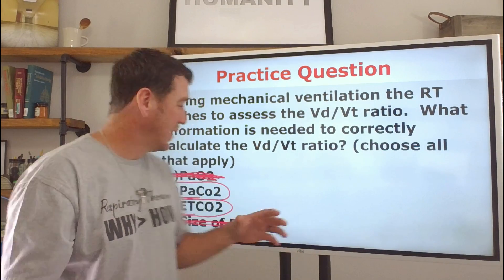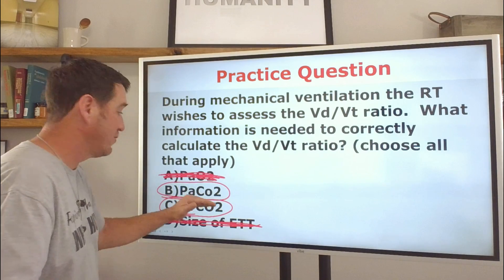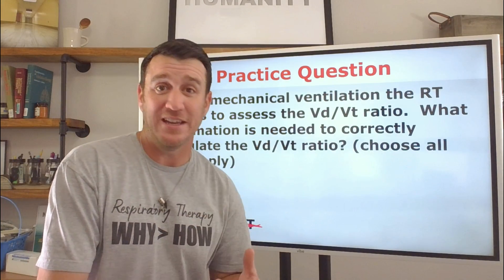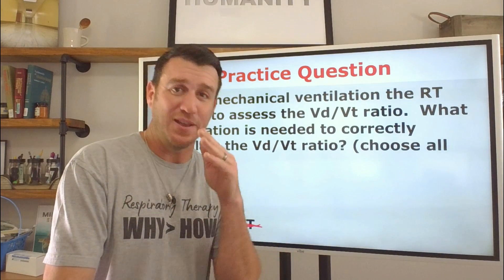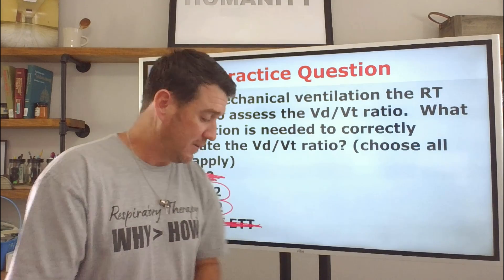And those are the only two numbers you need to calculate VD to VT: your arterial CO2, as well as your end tidal CO2. So we go back to the question.